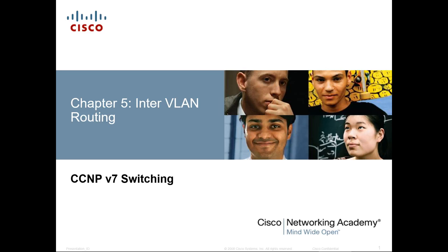Welcome to my CCNP version 7 switching lecture, focusing on chapter 5 of the foundation textbook. This is about inter-VLAN routing and DHCP. The material in the foundation book is fairly short, so I've included my inter-VLAN routing and DHCP lectures from my CCNA material, because in reality it's the same information just presented again.